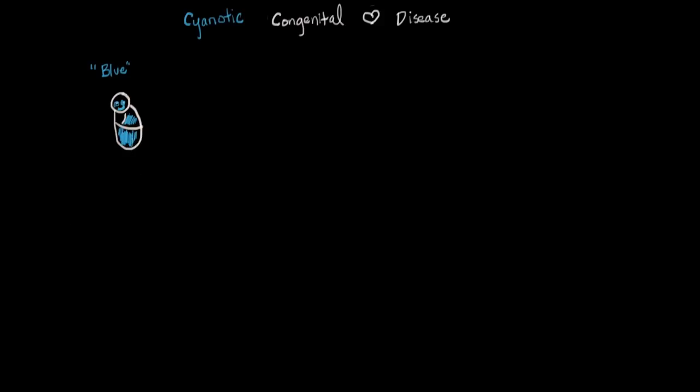To go back even further, we have this idea in medicine that when blood has a lot of carbon dioxide in it, it is blue. And blood with oxygen in it is red, how we usually think of blood. And this is true to a certain extent.